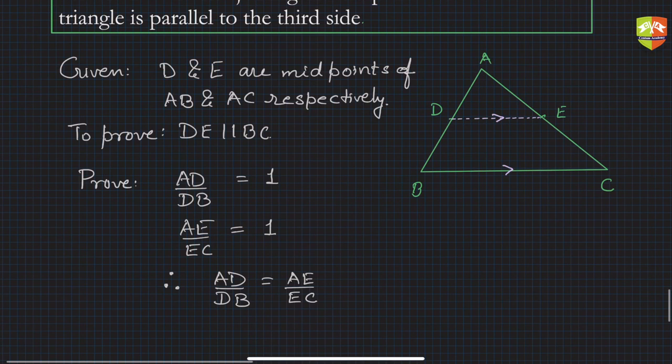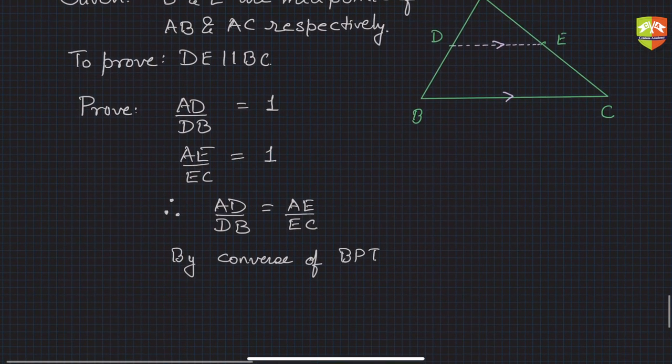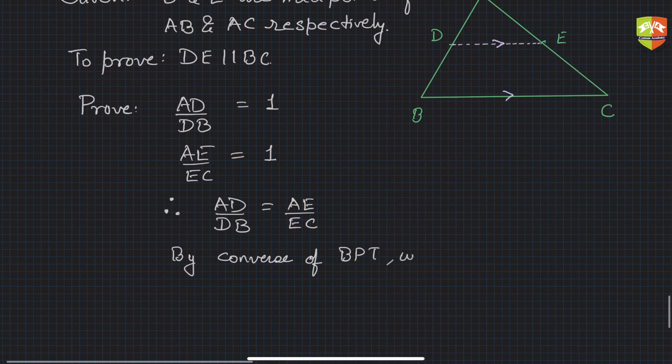Now by converse of basic proportionality theorem, which is also called as Thales theorem, so by converse of BPT we can say that DE is parallel to BC.